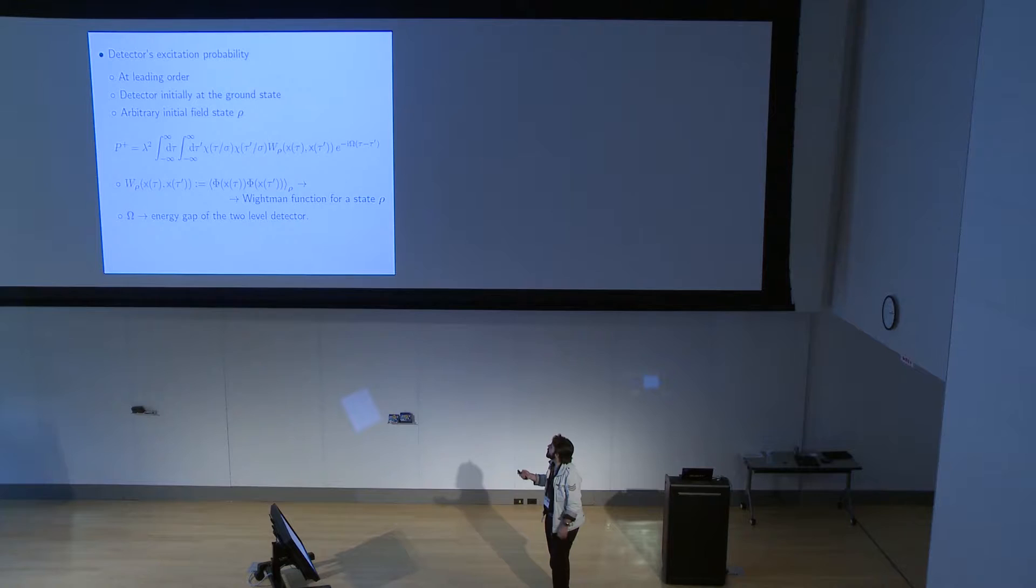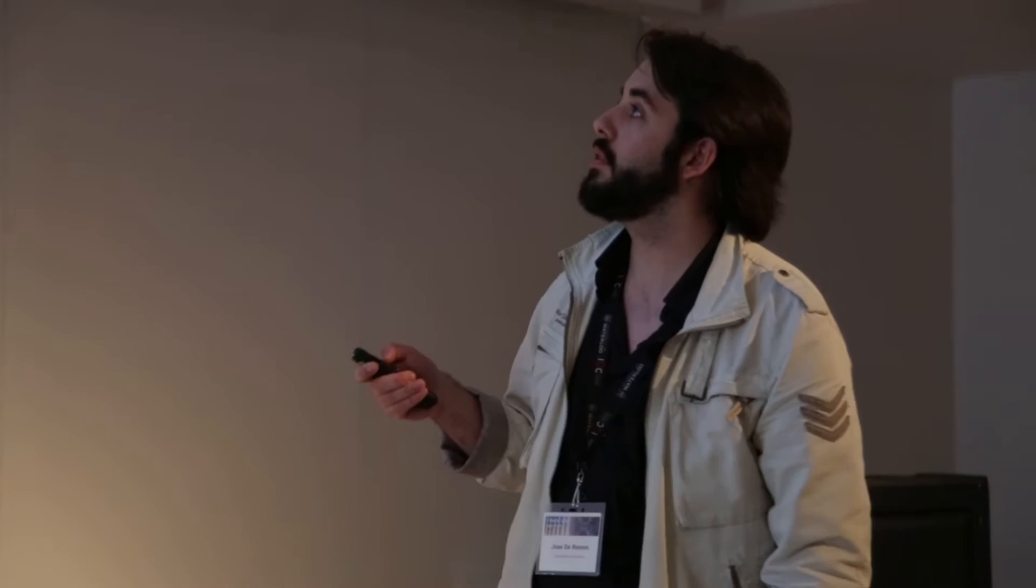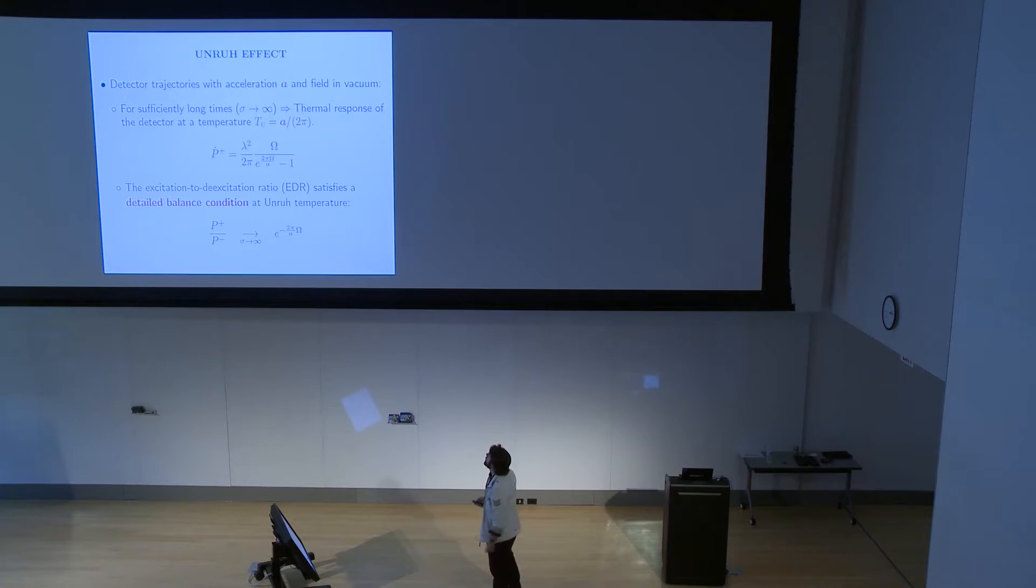This probability takes this form. And we see that this is not but the Fourier transform of the switching function times this W, which is not but the Wightman function, evaluated at two different points of the trajectory at this state rho. This omega is the energy gap of the two-level system which describes the detector.